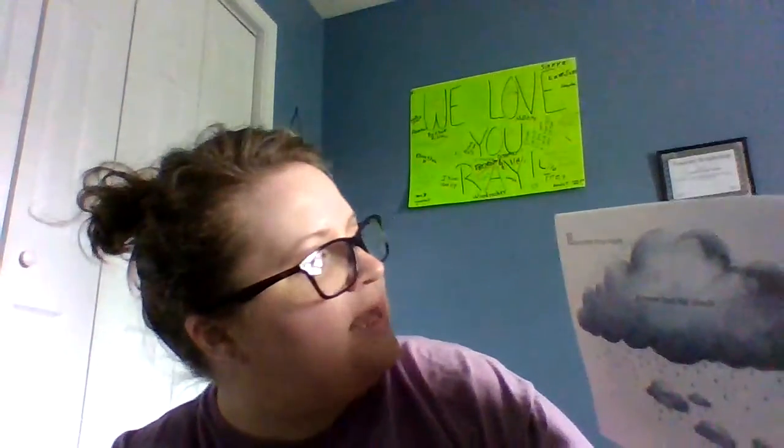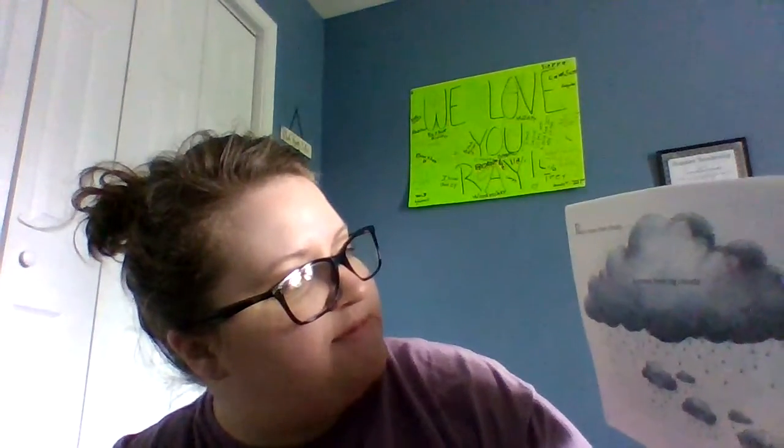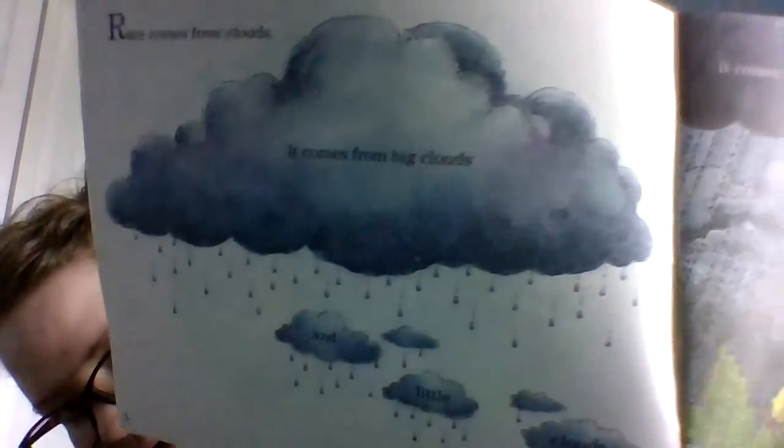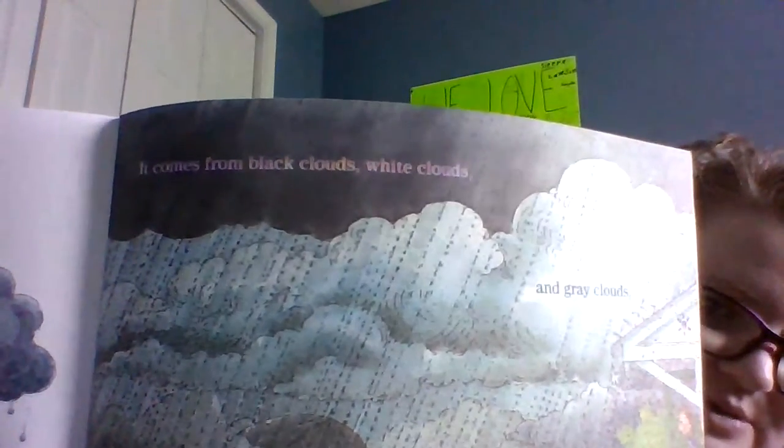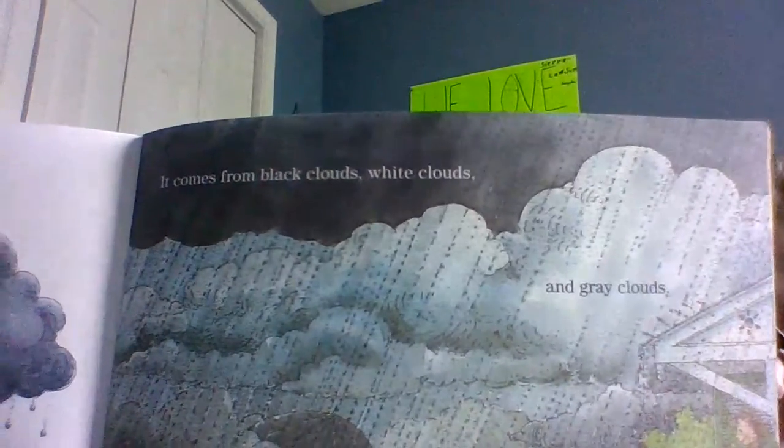Here's the first picture. It says rain comes from clouds — it comes from big clouds and little clouds. You kind of know that already. It comes from black clouds, white clouds, and gray clouds. Remember what kind of clouds are the gray clouds — do you guys remember what those are called? And what about the black storm thunder clouds?